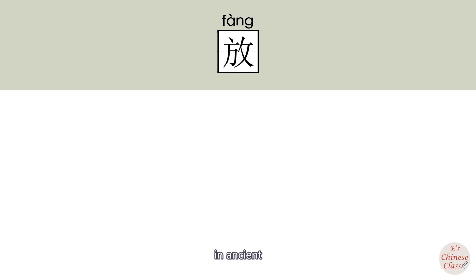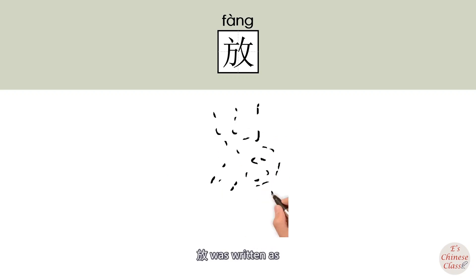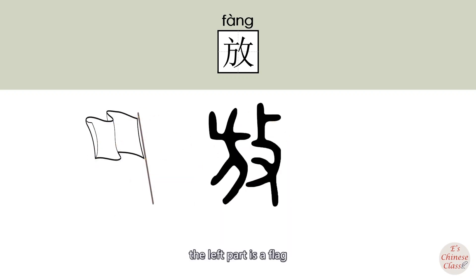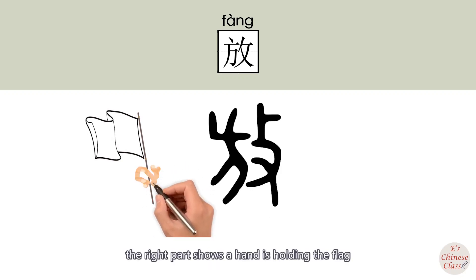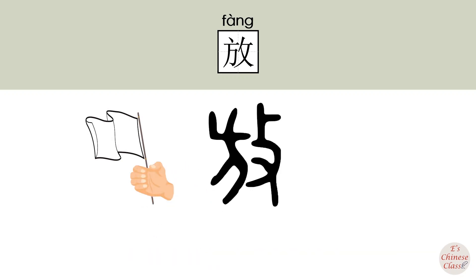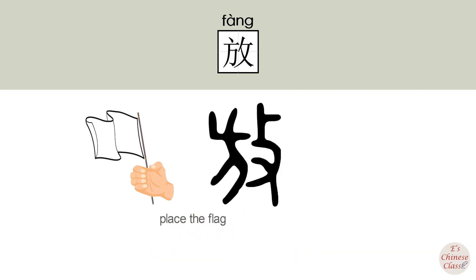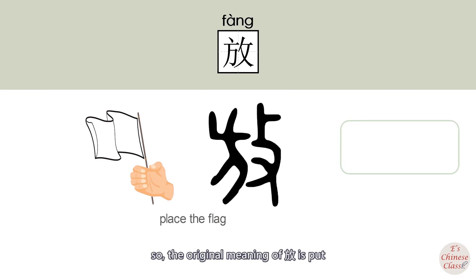In ancient times, 放 was written differently. The left part is a flag, and the right part shows a hand holding the flag. This character indicates placing the flag, so the original meaning of 放 is 'put'.